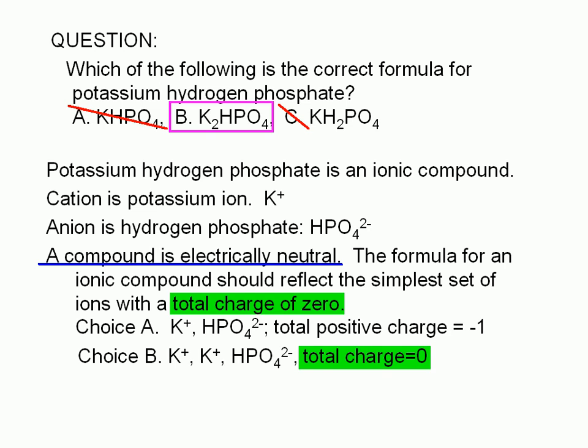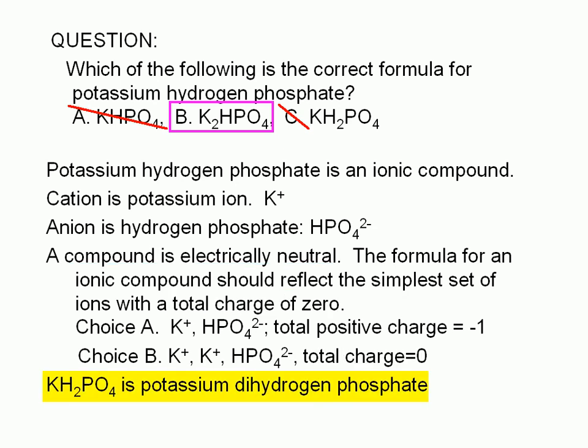Then notice that choice C is the correct formula for potassium dihydrogen phosphate.